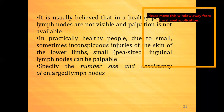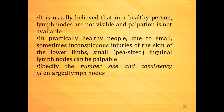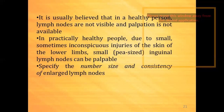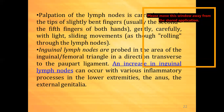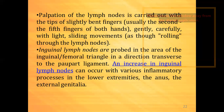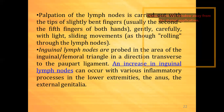We specify the number, size, and consistency of enlarged lymph nodes. As per the criteria studied, one to three deep inguinal lymph nodes can be identified. In the superficial group: vertically four or five lymph nodes, medially two lymph nodes, and laterally three lymph nodes. The palpation of the lymph nodes is carried out by the tips of slightly bent fingers — usually the second and fifth fingers of both hands — gently, carefully, with light sliding movements, as though rolling through the lymph nodes.